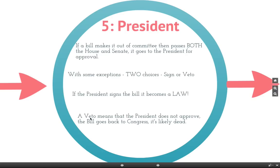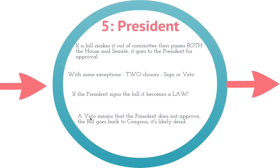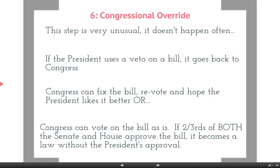The President can also veto the bill, which means he does not approve it, and the bill goes back to Congress. At that point it's likely dead. However, there is one exception: Congress can override the President's veto. If two-thirds of both the Senate and the House approve the bill, it would become a law without the President's approval. Congress can also fix the bill and re-vote it through, hoping the President likes it the second time, but neither of these scenarios is very likely.